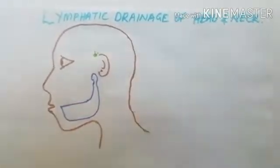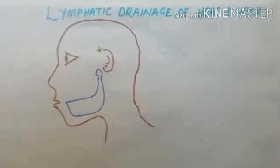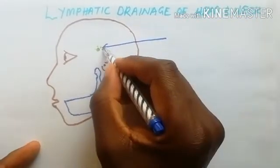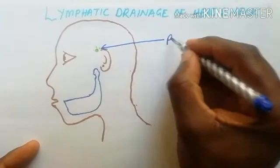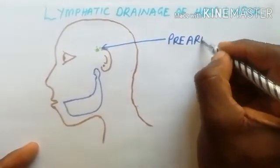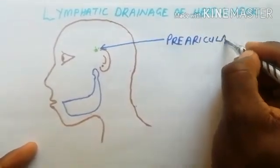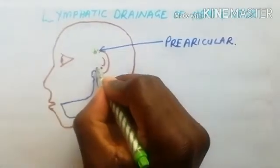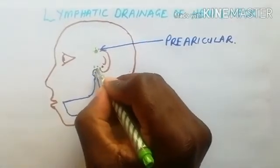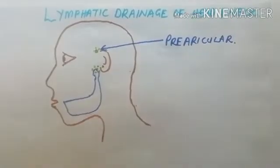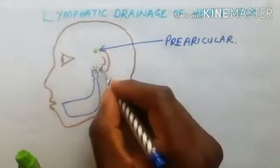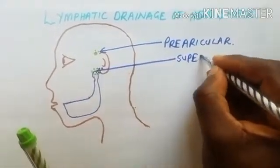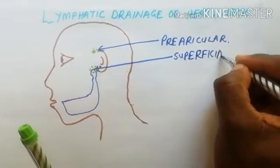The first group of lymph nodes are found before the ear, so we call them the pre-auricular lymph nodes. The second group of lymph nodes are found at the area of the parotid gland, and we call them the superficial parotid lymph nodes.